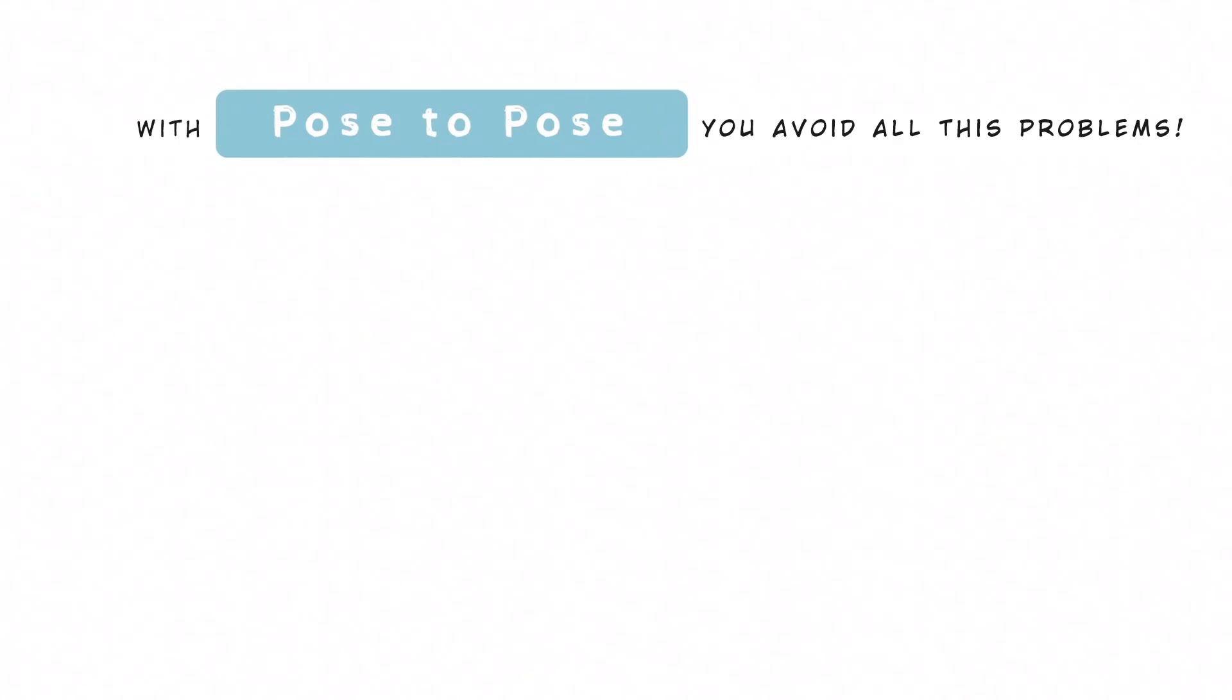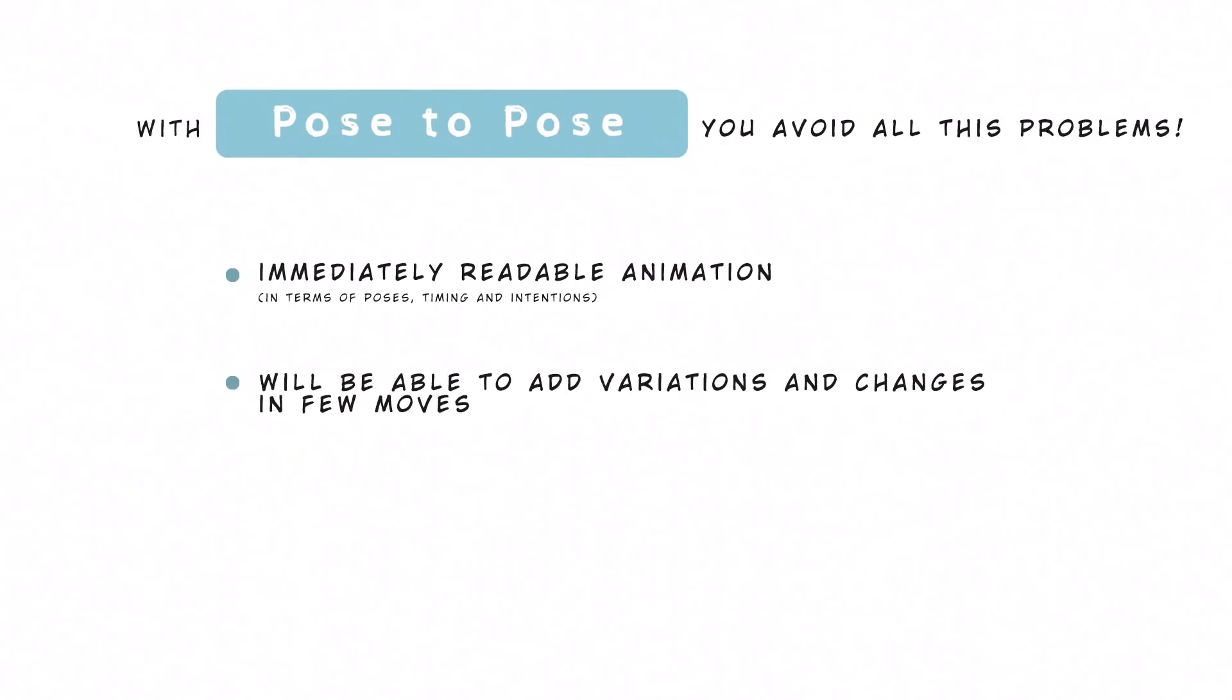With pose to pose, you avoid all these problems because your animation will be immediately readable in terms of poses, timing and intentions, and you will be able to add variations and change stuff in few moves and proceed to spline and refine when you will be sure of what you are doing.